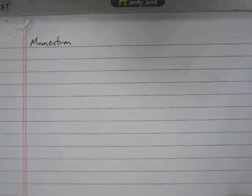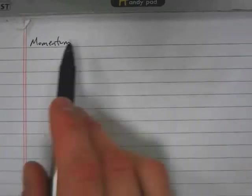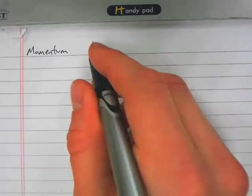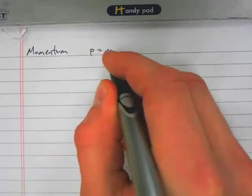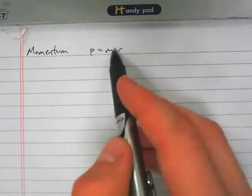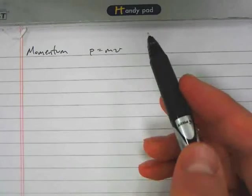Photons not only have energy but they also have momentum. Now traditionally, classically, momentum is equal to mass times velocity, but we said that a photon is a massless particle, its mass is zero, so how can it have momentum?